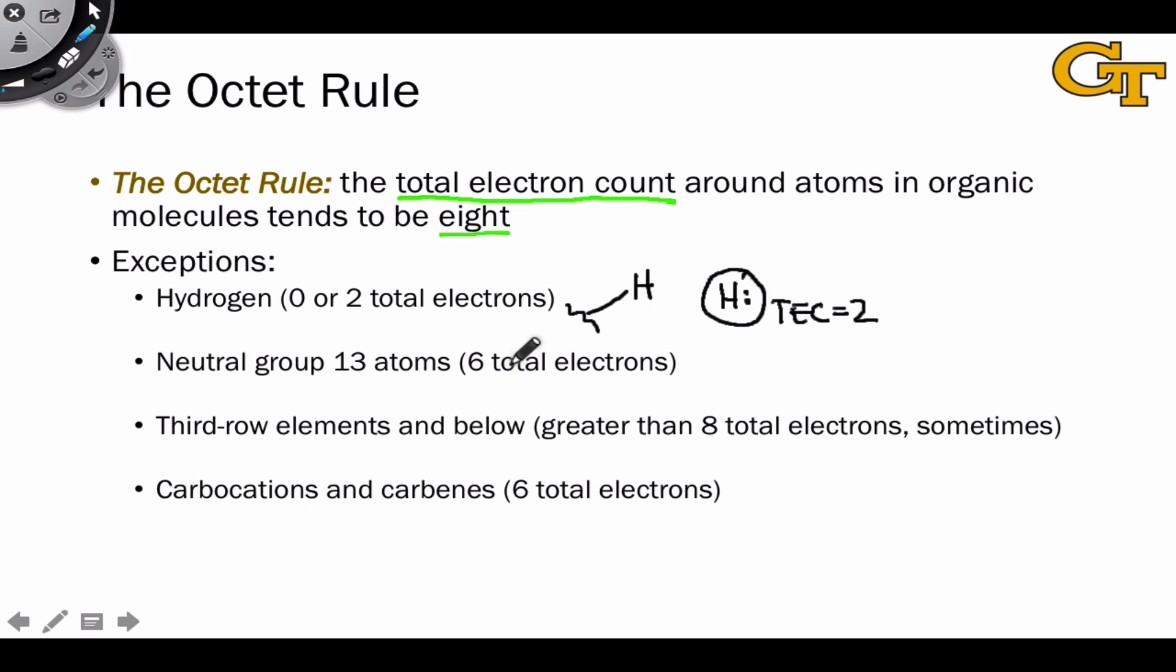Neutral group 13 atoms are another famous case of exception to the octet rule, and these have six total electrons according to our convention. So the classic examples are, for example, boron and aluminum. Third row elements and below can have total electron counts that are greater than eight, sometimes, not always. So sulfur, for example.